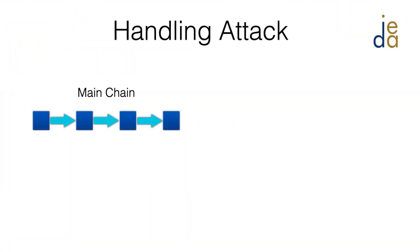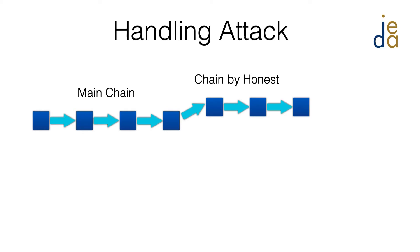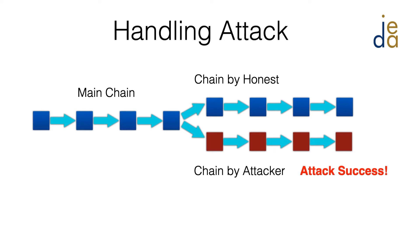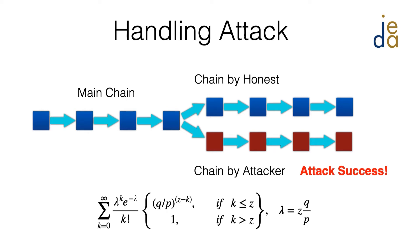I want to quickly demonstrate one particular aspect: the security. Everyone on the network reaches consensus by sticking to the longest chain. However, malicious people can create their own bad chain to attack the system. When the bad chain exceeds the good chain, we call it a successful attack. It turns out that the probability of a successful attack can be calculated based on a random walk model, which will be taught in one of our core courses.